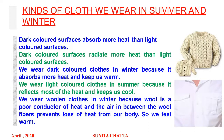Now the kinds of clothes we wear in summer and winter. Dark colored surfaces absorb more heat than light colored surfaces, and dark colored surfaces radiate more heat than light colored surfaces. That is why we wear dark colored clothes in winter, because they absorb more heat and keep us warm. We wear light colored clothes in summer because they reflect more heat and keep us cool. We wear woolen clothes in winter because wool is a poor conductor of heat and the air in between the wool fibers prevents loss of heat from the body, so we feel warm.